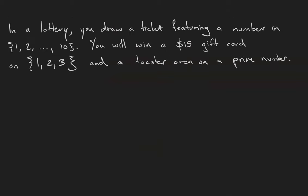Here's the idea. In some lottery you draw a ticket featuring a number between 1 and 10. You will win a $15 gift card if your number is 1, 2, or 3, and you'll win a toaster oven in the event that your number is prime.